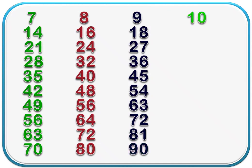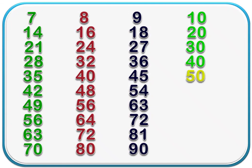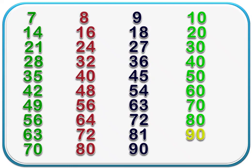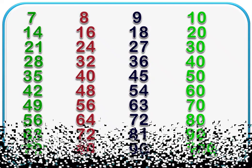10 1 is 10. 10 2 is 20. 10 3 is 30. 10 4 is 40. 10 5 is 50. 10 6 is 60. 10 7 is 70. 10 8 is 80. 10 9 is 90. 10 10 is 100.